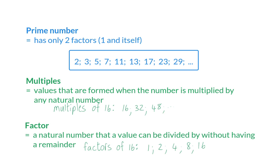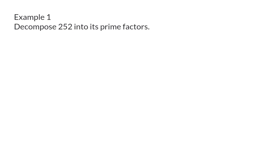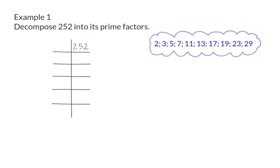In the first example, we're going to have a look at how we can break up bigger numbers into its prime factors. When breaking up or decomposing a value into its prime factors, we need to take into account all the prime numbers and decide which is the smallest prime number that is a factor of this value.